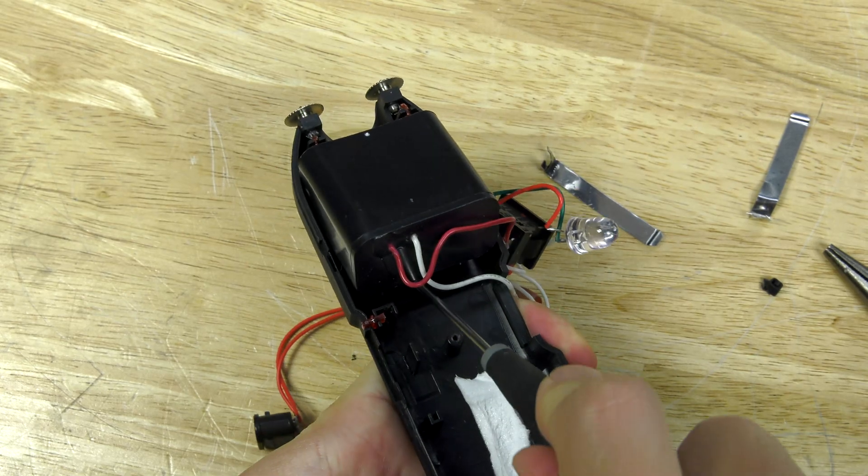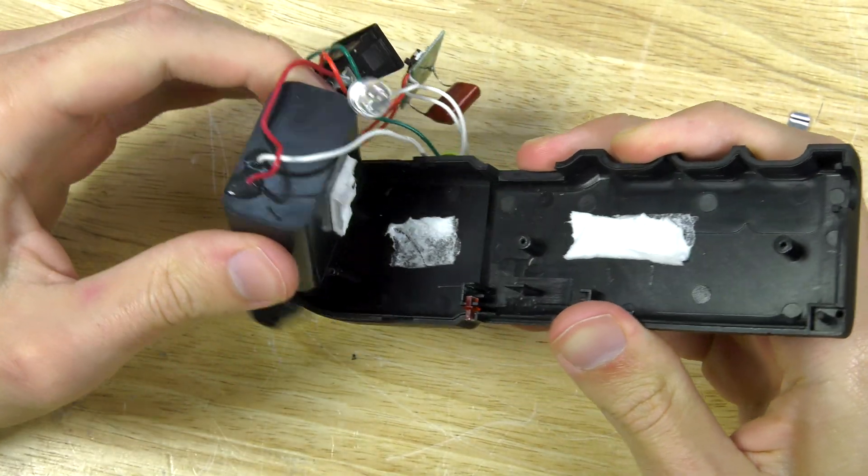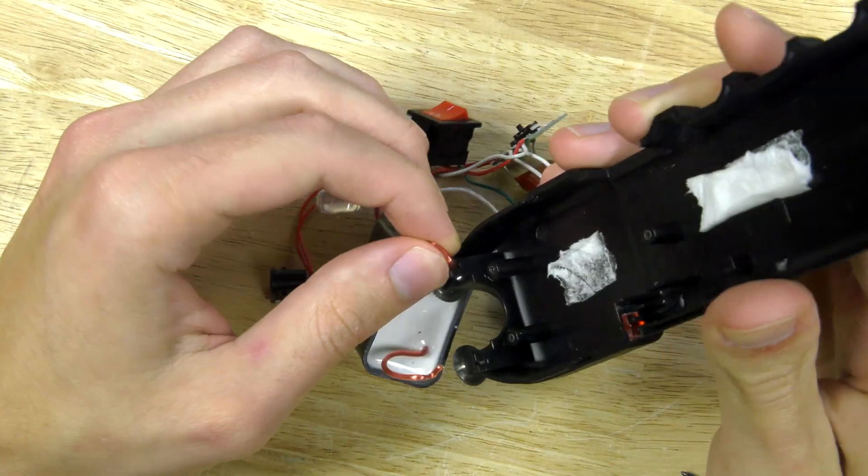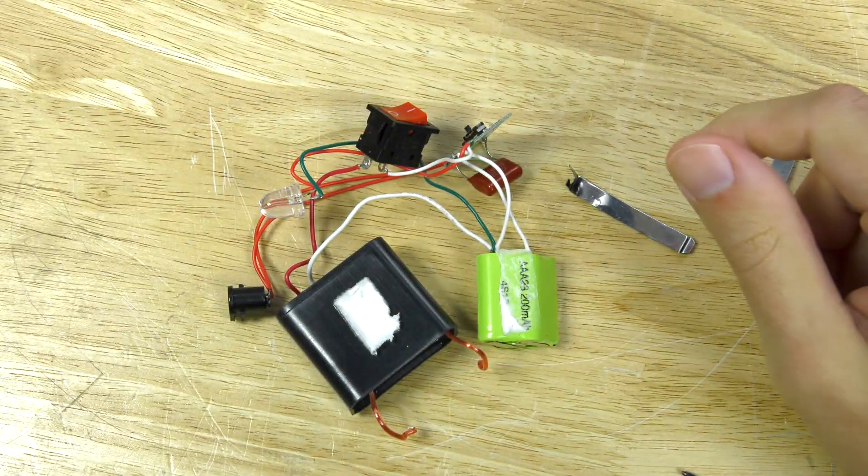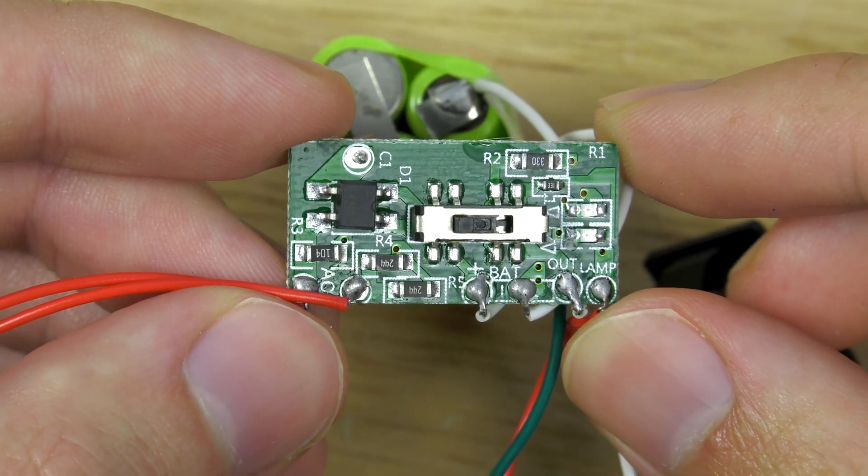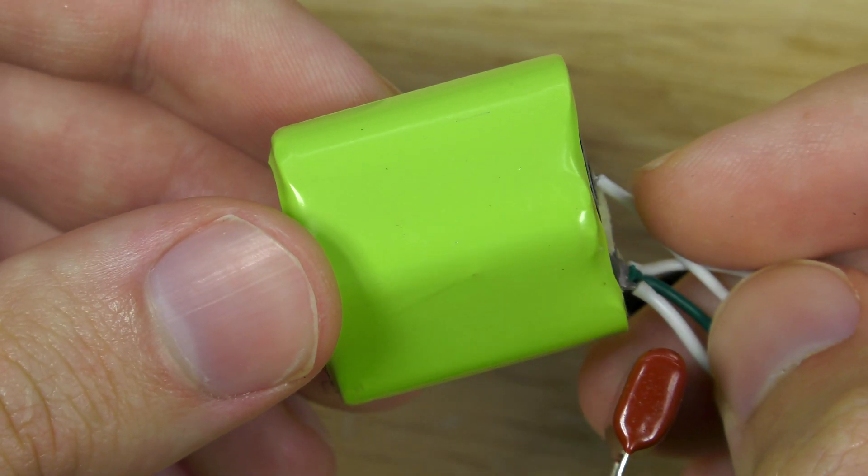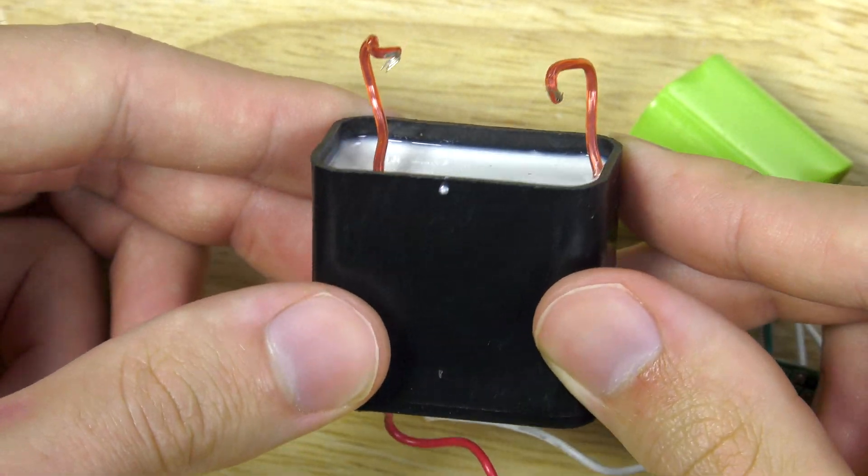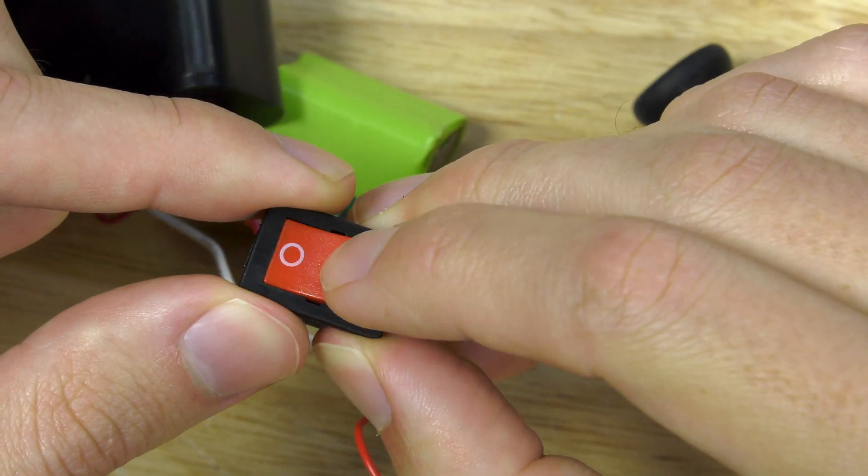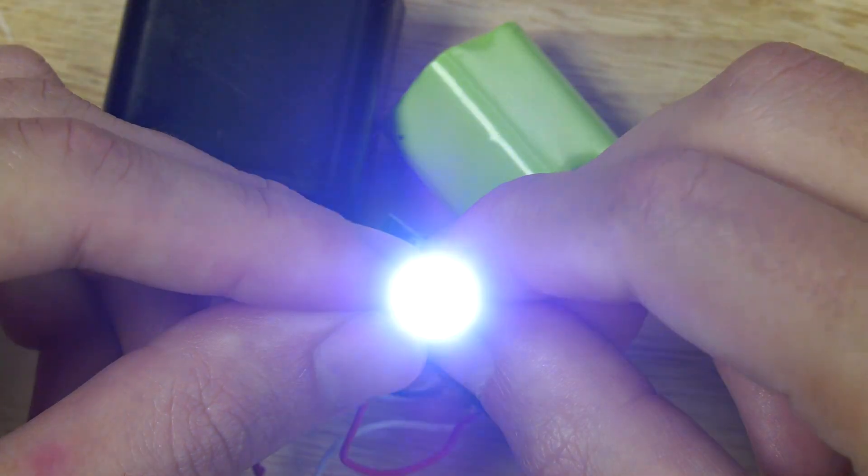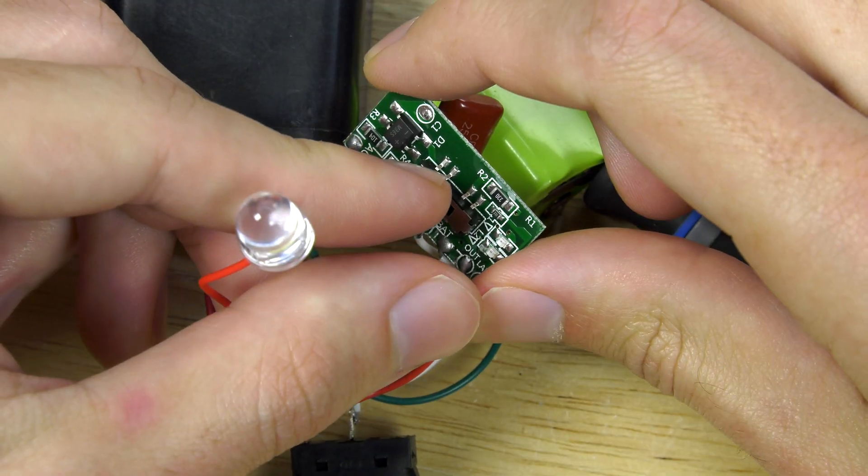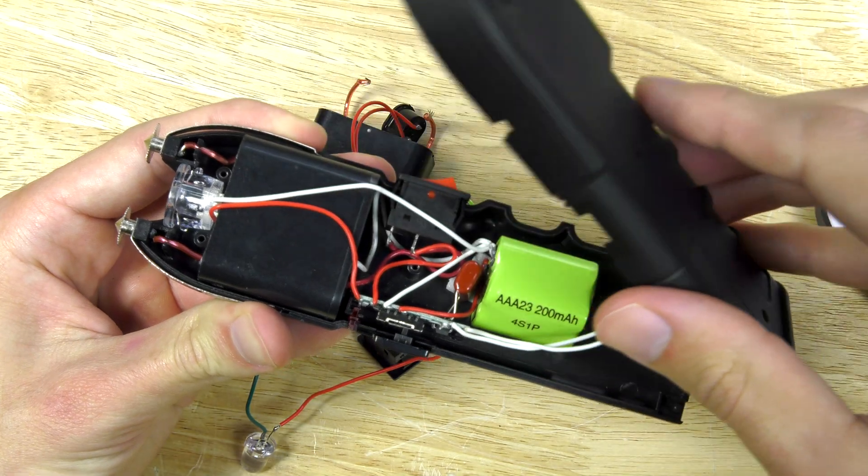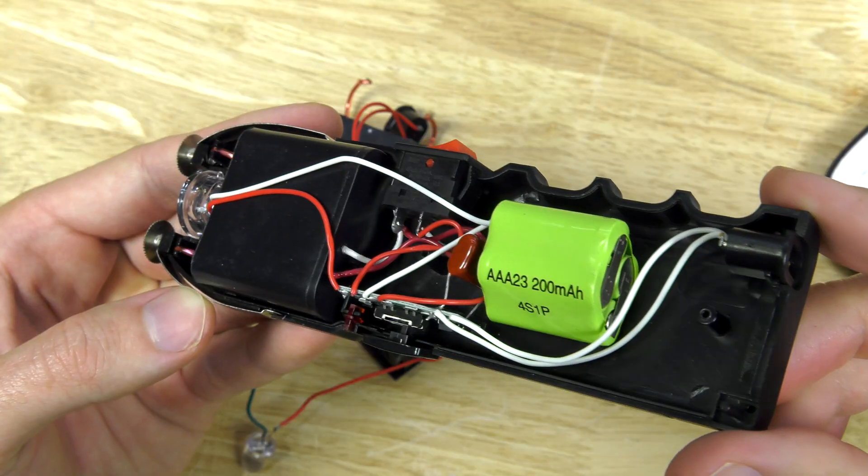And FYI you're probably going to void the warranty of your taser, so just throwing that out there. Now this is the main circuit board, this is the battery, and this is the charging port.